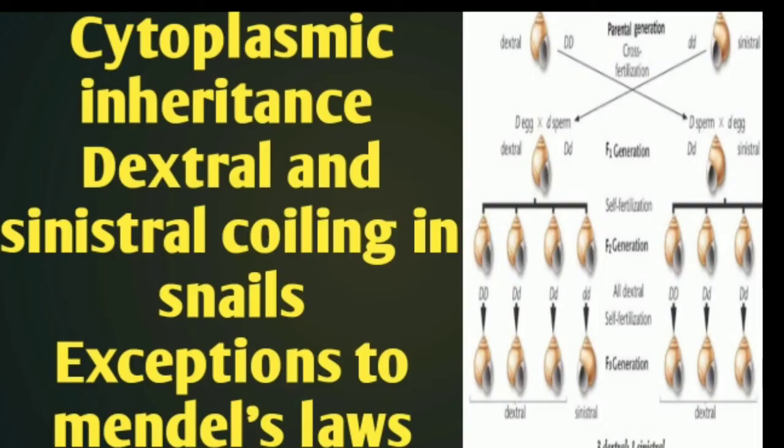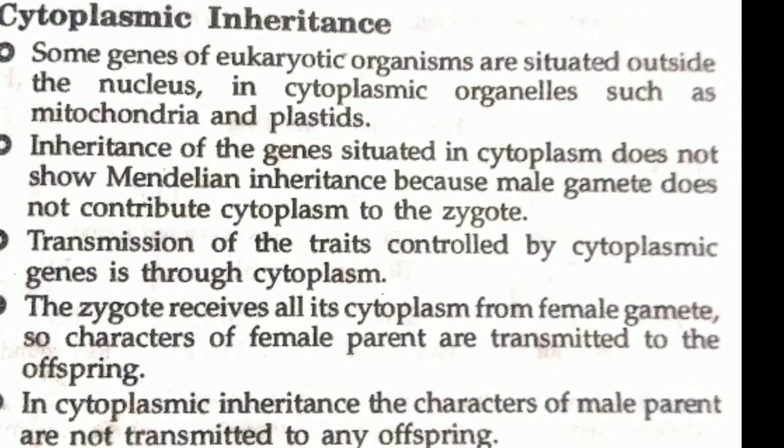Hello dear students, welcome to Education Simplified by OCDC. This is Vinod Kumar Garg and in this video you are going to learn about cytoplasmic inheritance with the example of dextral and sinistral coiling in snails. This is a topic from exceptions to Mendel's laws. Some genes of eukaryotic organisms are situated outside the nucleus.